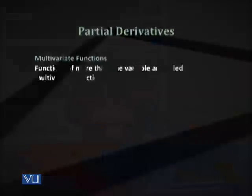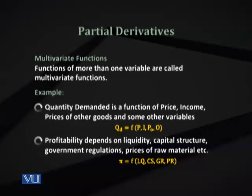Although in the law of demand we speak that quantity demanded is a function of price, we say ceteris paribus — that is, all other variables are held constant. From here we can get the idea of partial derivatives. The concept of partial differentiation means we look into the rate of change of the dependent variable with respect to change in one independent variable, while we assume the other variables are constants.